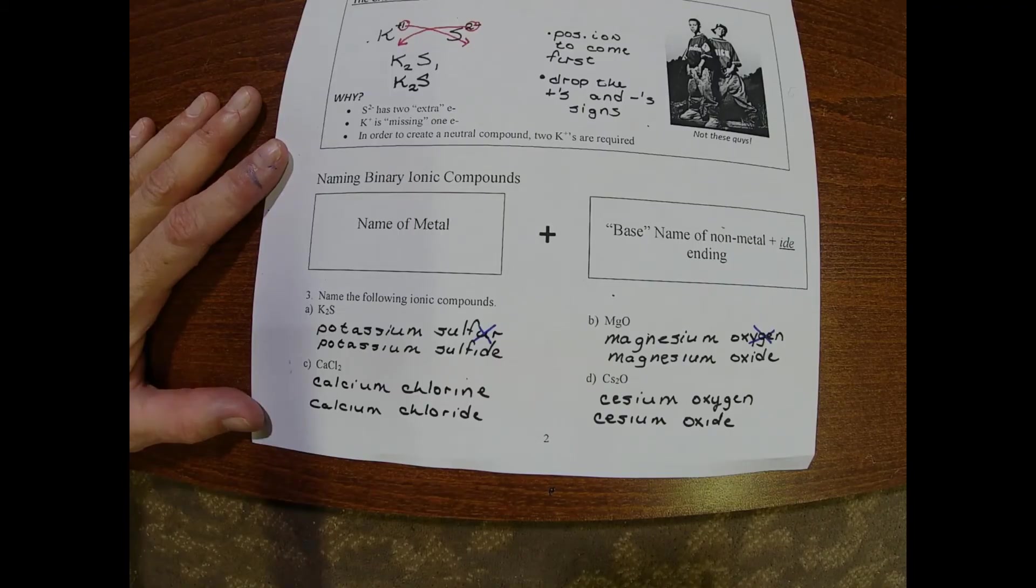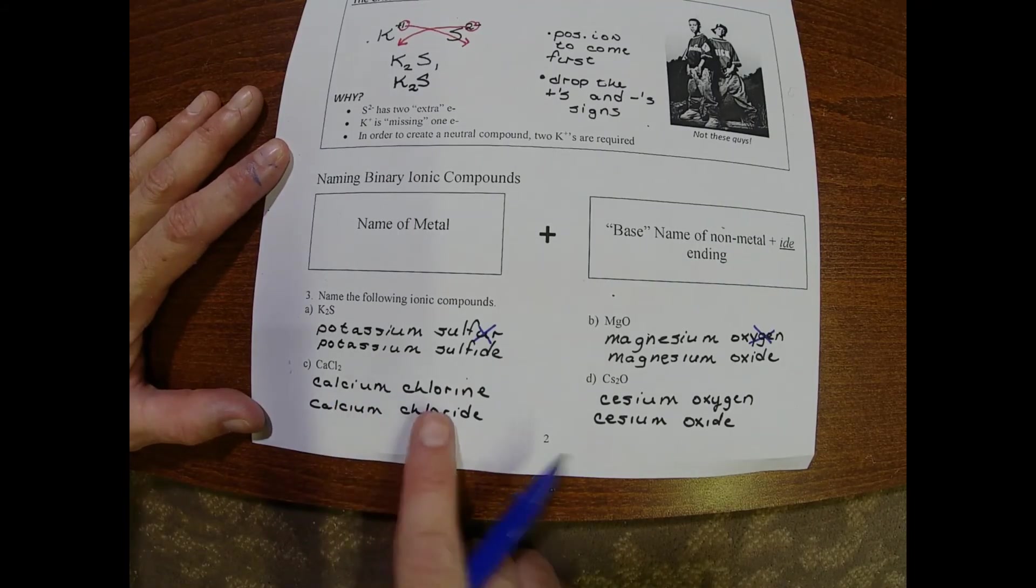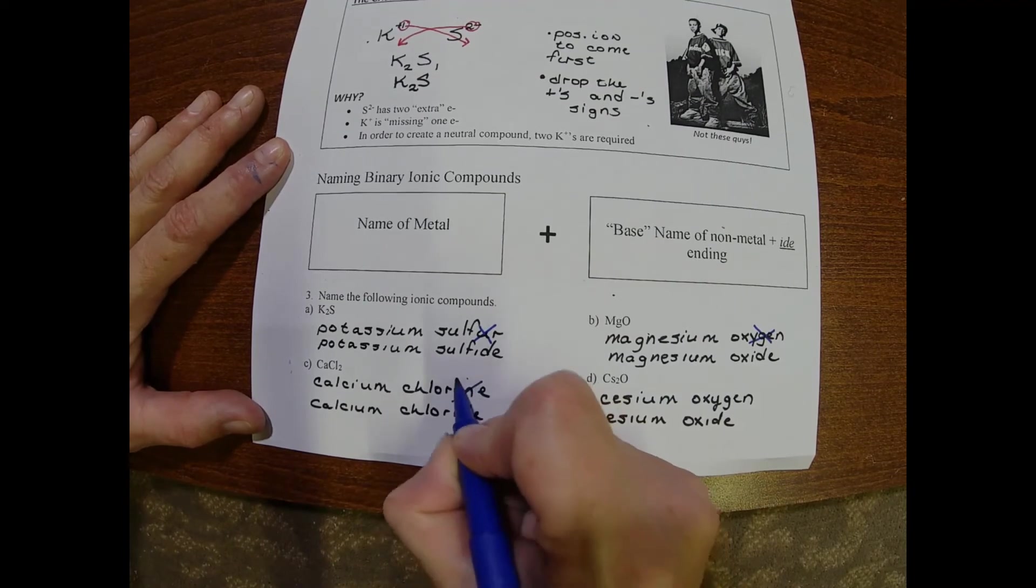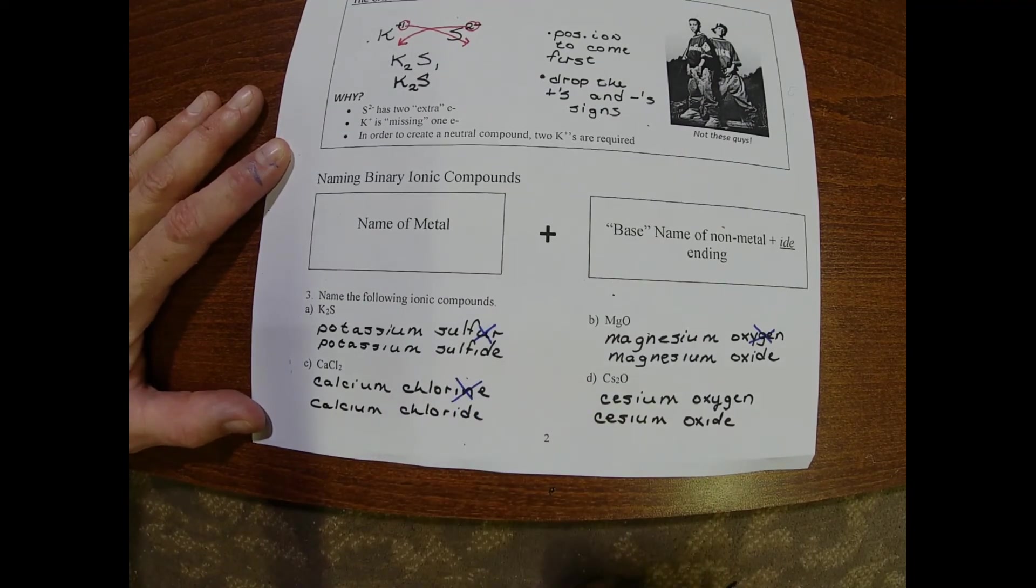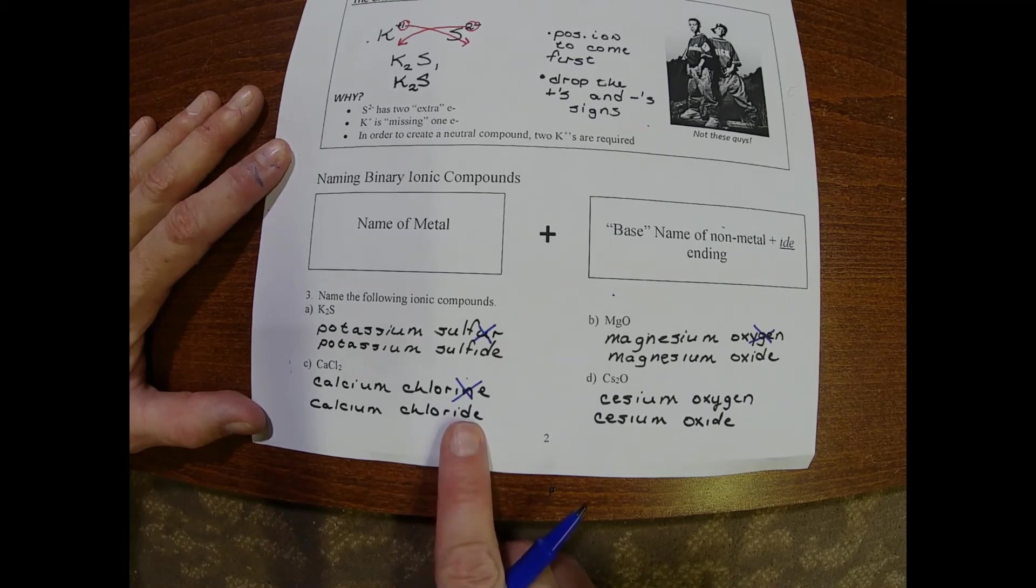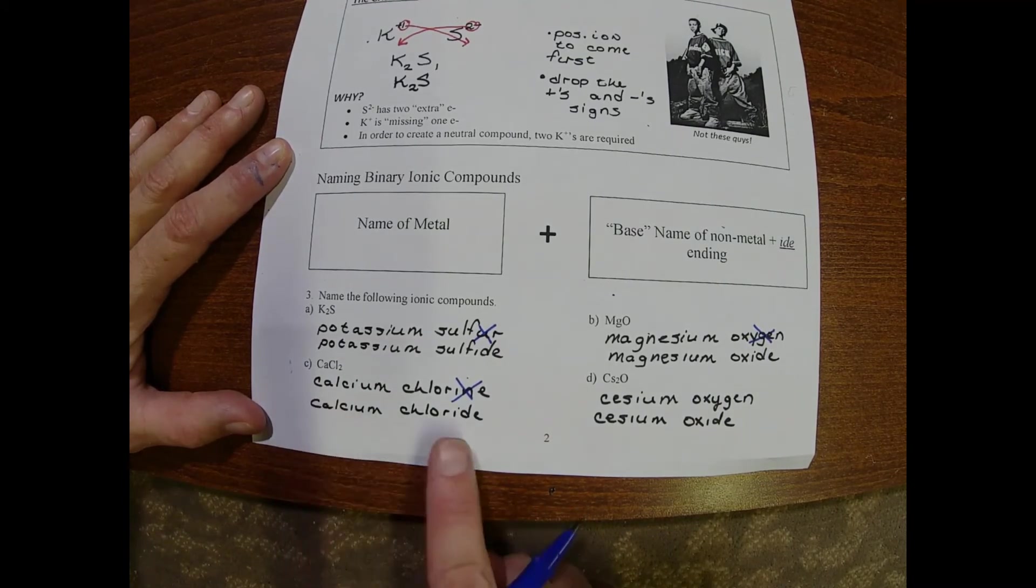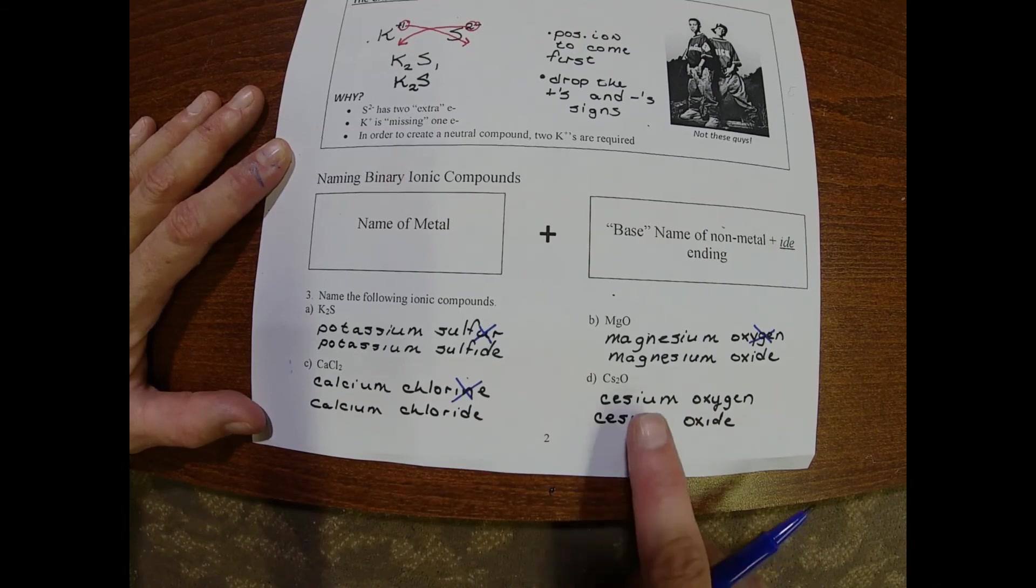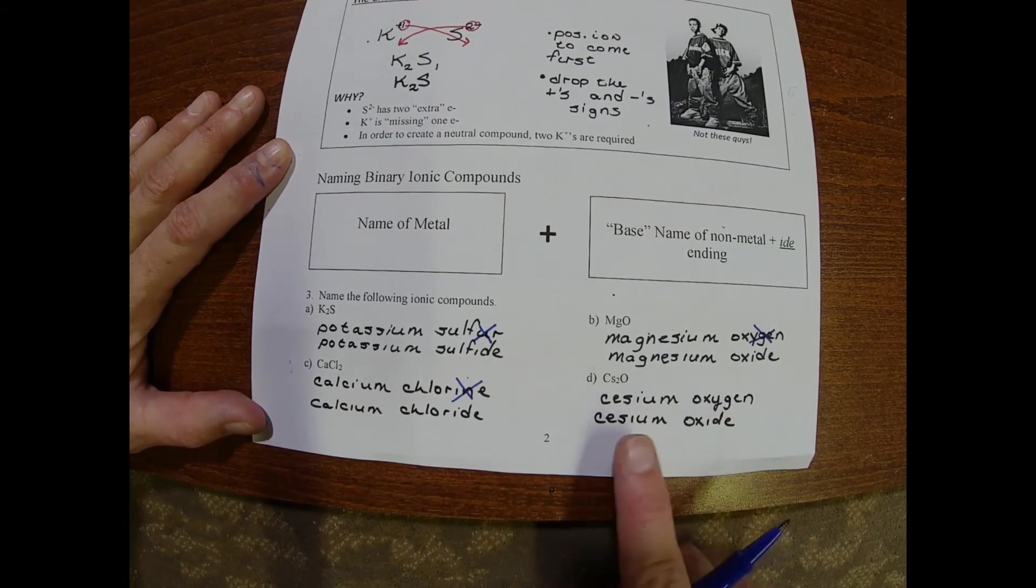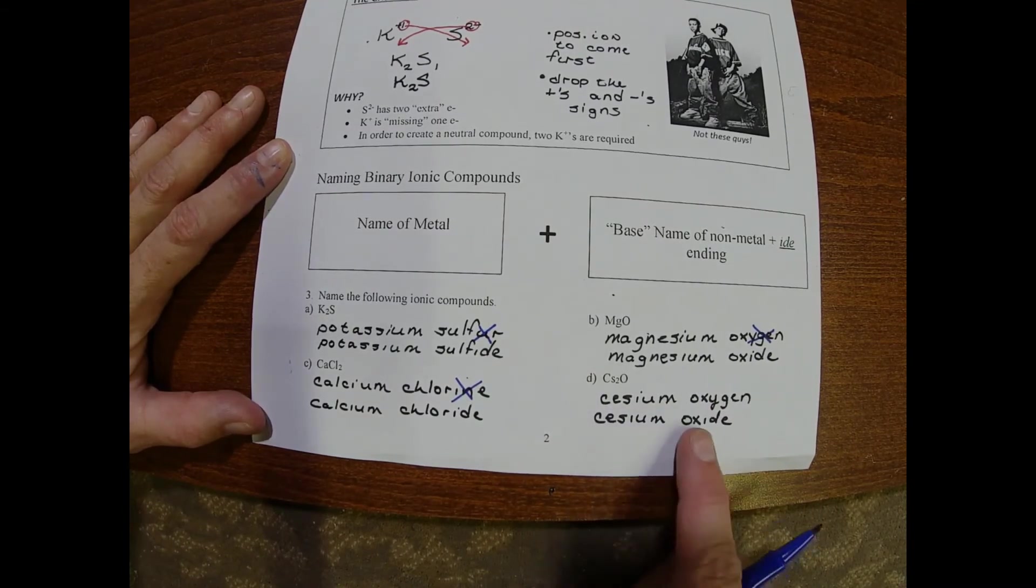For the next two we have calcium and chlorine. The -ine on the chlorine, on the nonmetal, get switched out for -ide. So the name of CaCl2 is calcium chloride. We have cesium and oxygen which then becomes cesium oxide. That whole part just changes to the -ide.